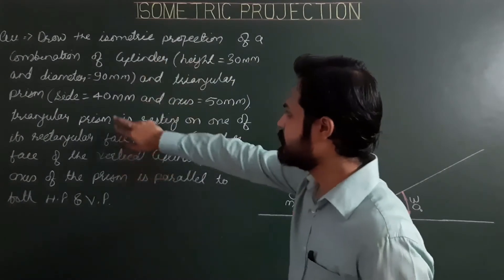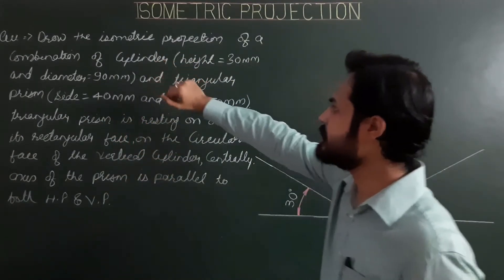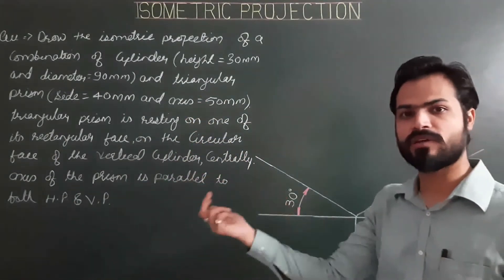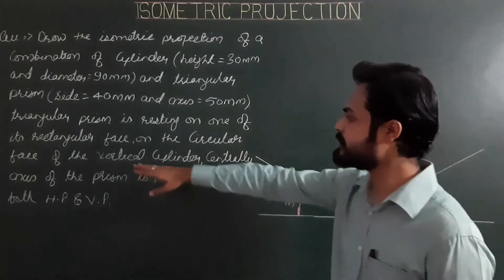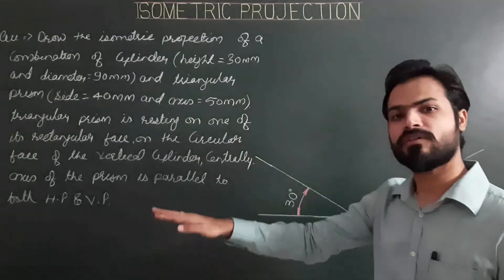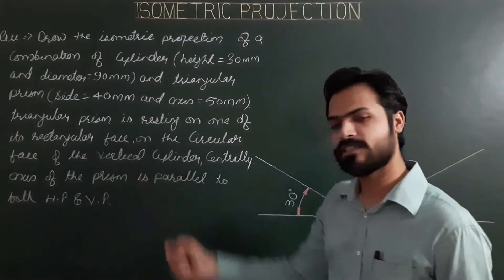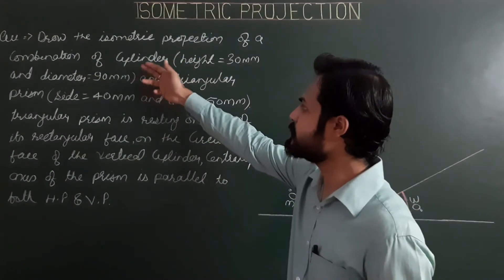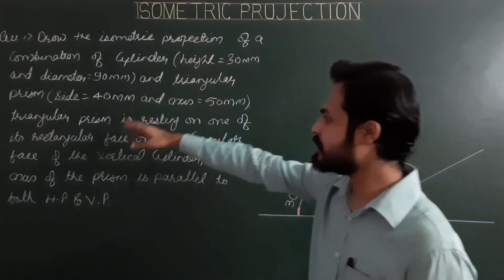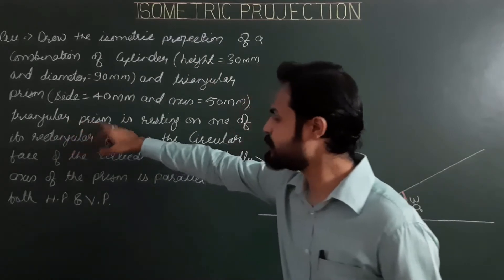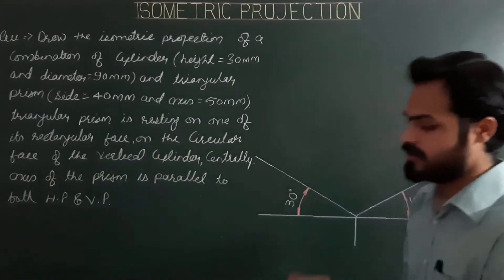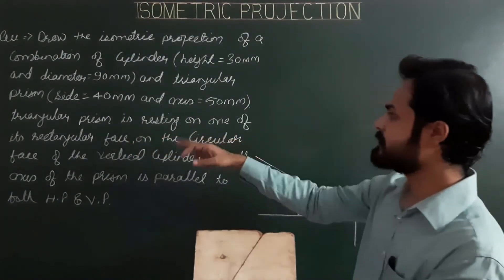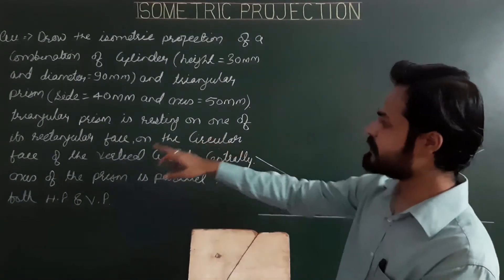The combination is of two solids: cylinder and triangular prism. The first solid, the cylinder, is vertical — vertical means the cylinder is resting on its circular face on the HP. One of the circular faces or base of the cylinder will be on the horizontal plane and the axis will be vertical, meaning the axis is perpendicular to HP. On the upper face or upper circular face of the cylinder, the second solid, the triangular prism, is resting on its rectangular face.